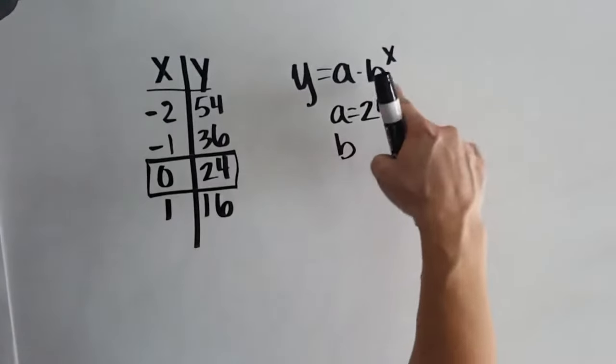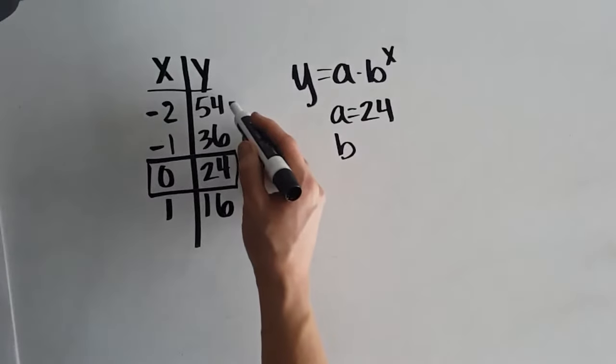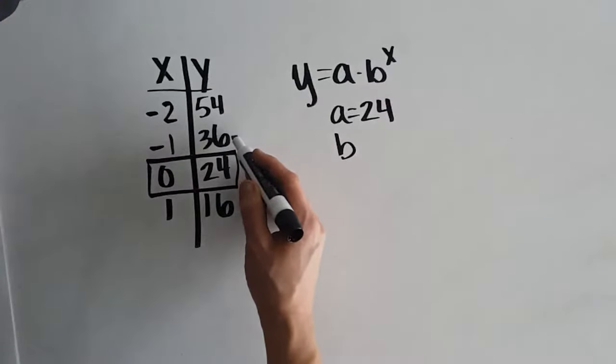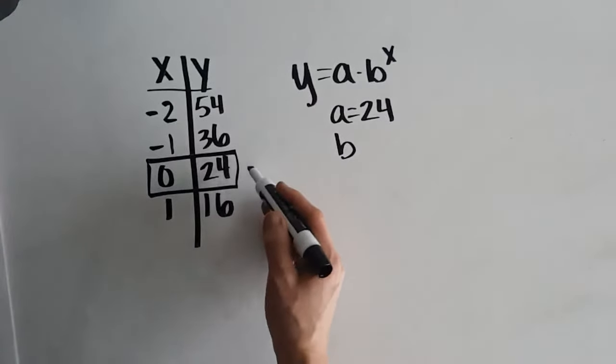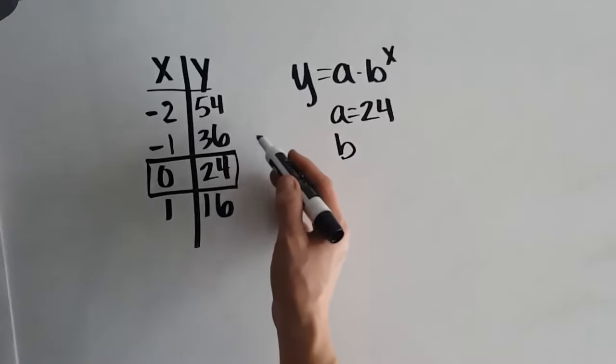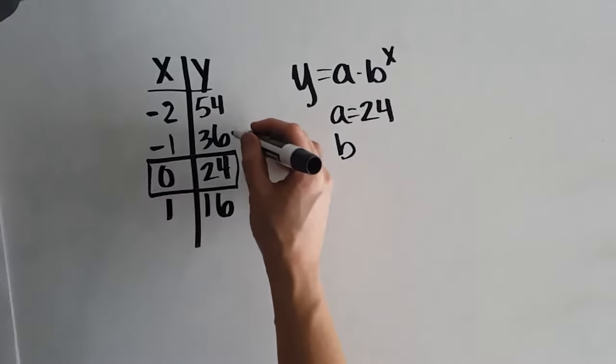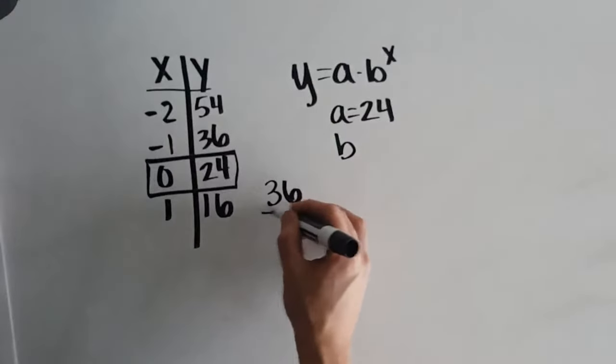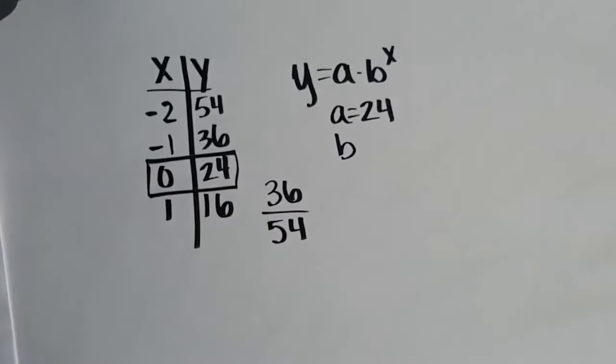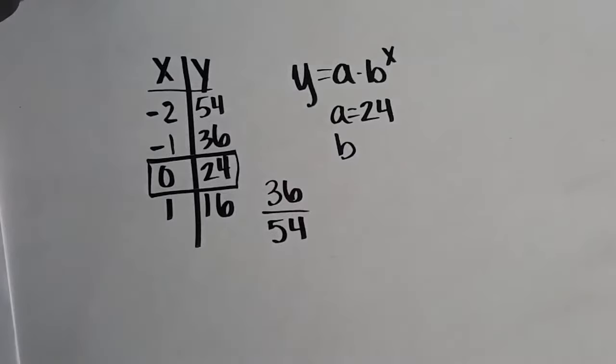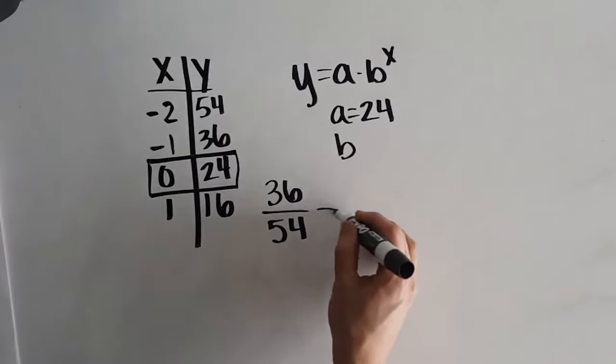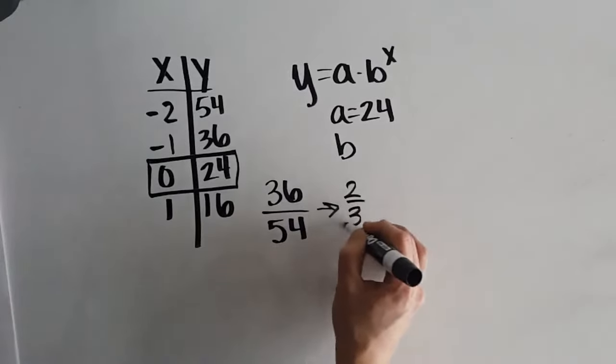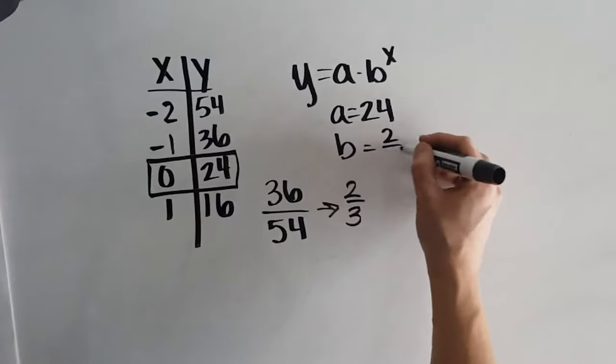We also need our b, our multiplier. Well, when I'm looking at this, I don't really know what I'm multiplying 54 by to get to 36 and 36 by to get to 24. So because I can't really tell what it is that I'm doing, to find our b value, we're going to take one y value, doesn't matter which one you start with, and divide it by the one immediately before it. So if I do 36 divided by 54, and you can turn this into a decimal, or you can leave it as a fraction if you want to. It doesn't matter. But when I leave it as a fraction, this ends up being 2 thirds.